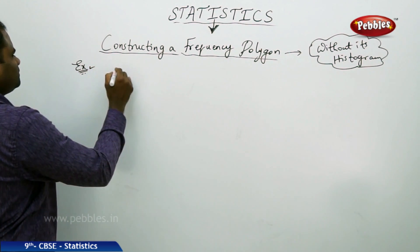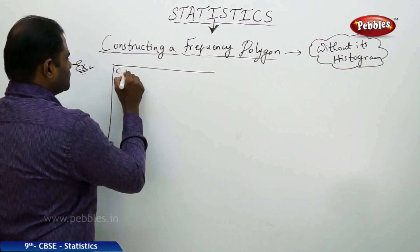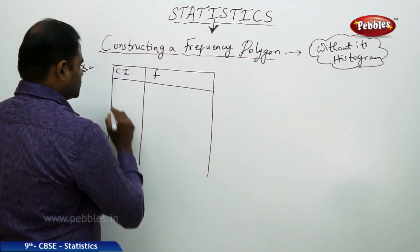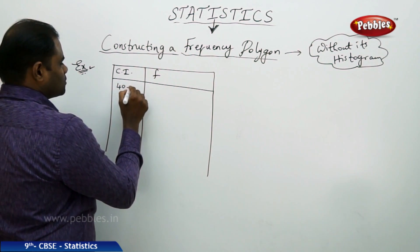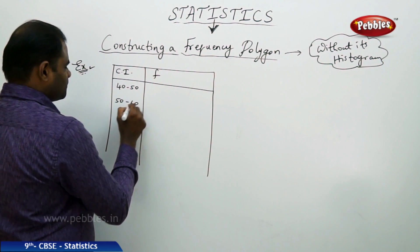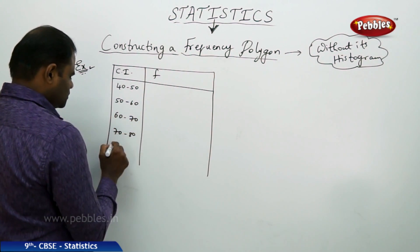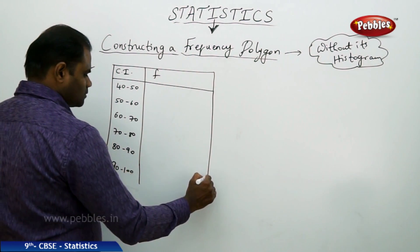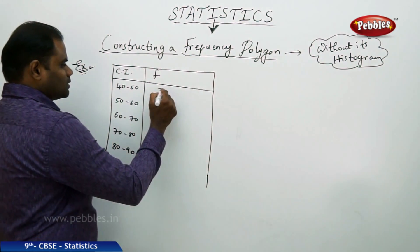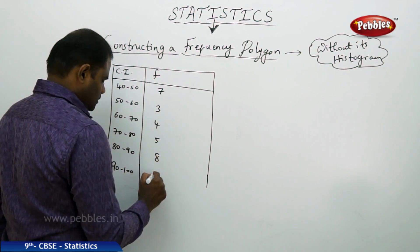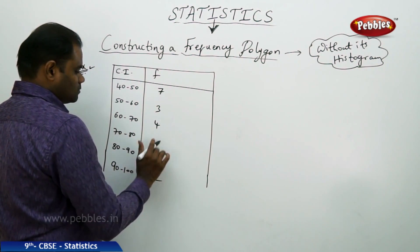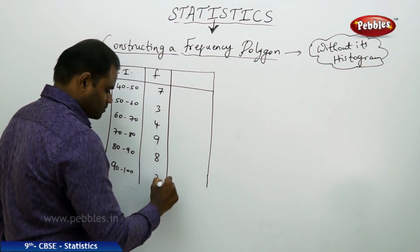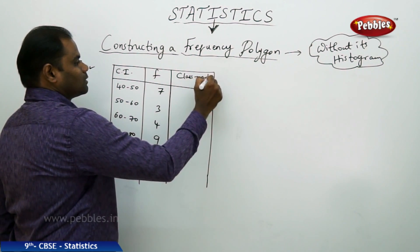For example, I have the data with class interval and frequency. So in this case, say my class interval is the marks of range 40 to 50, 50 to 60, 60 to 70, 70 to 80, and 90 to 100, and say the frequency is 7, 3, 4, 5, 8, 2.